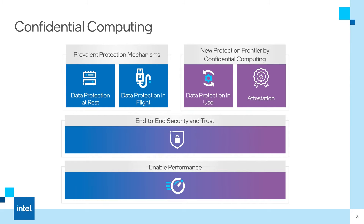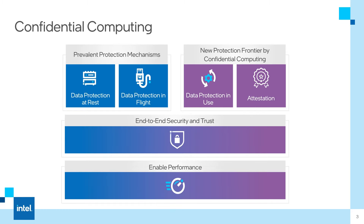Attestation is the final piece of this new technology. It can mathematically prove to an external party that one, it is running with expected code and data — basically it's not tampered with. Two, it runs on specific confidential computing hardware like Intel Trust Domain Extensions. And three, that it is running at the latest security level, also referred to as the trusted computing base.